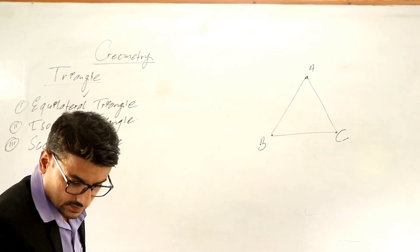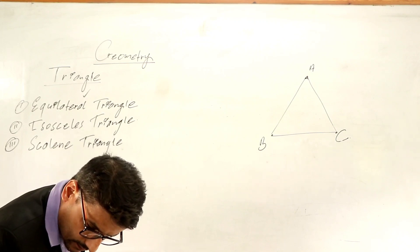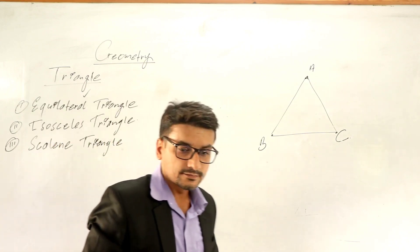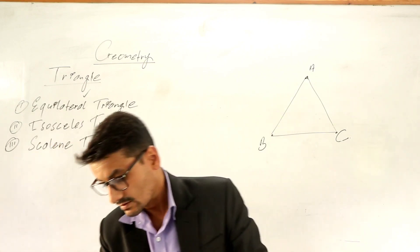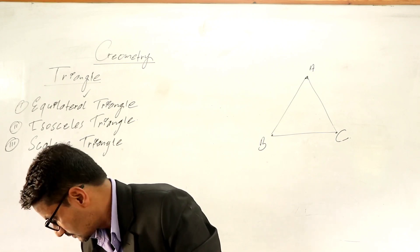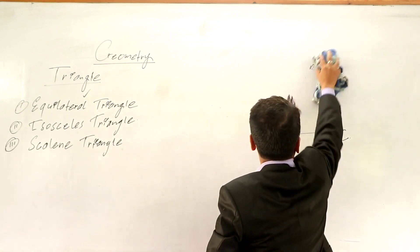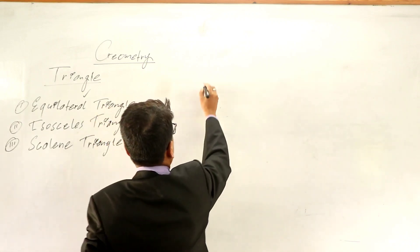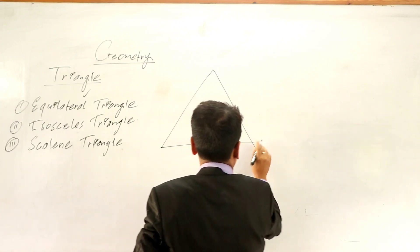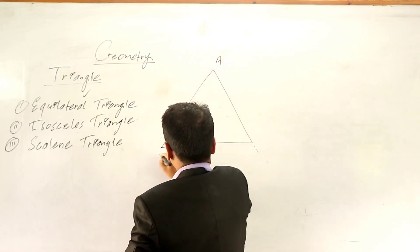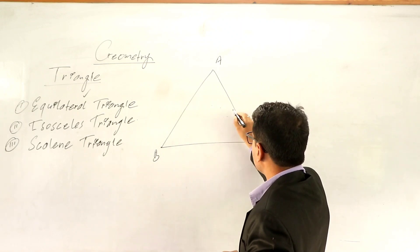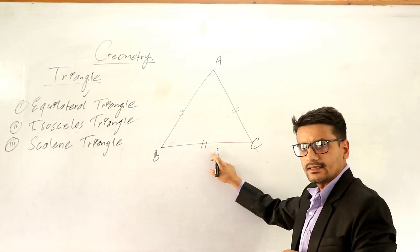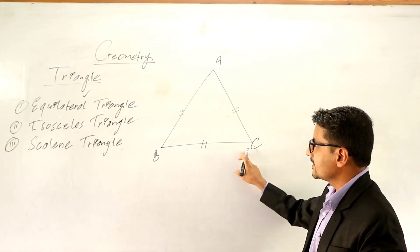Equilateral triangle: here is triangle ABC. Equilateral triangle means if all the sides of a triangle are equal to each other, in that situation we say that triangle is called an equilateral triangle.